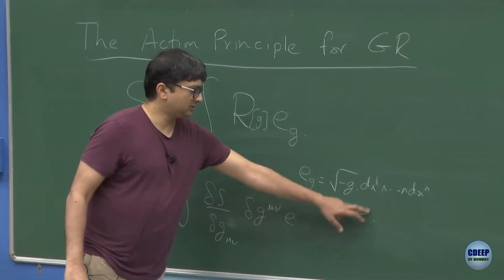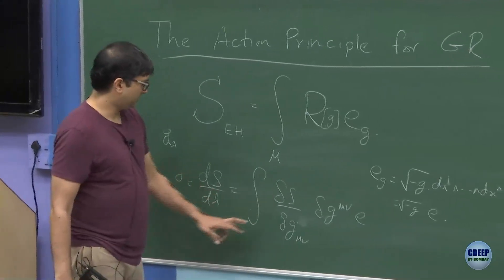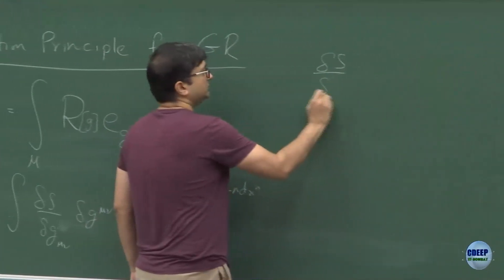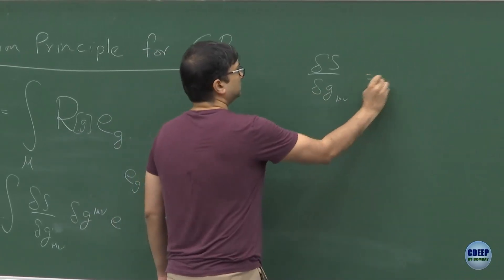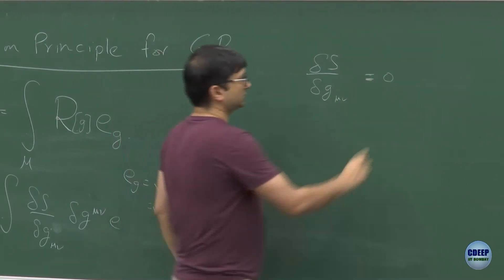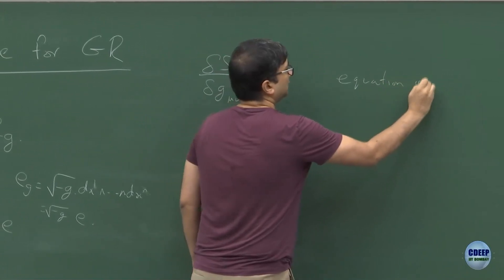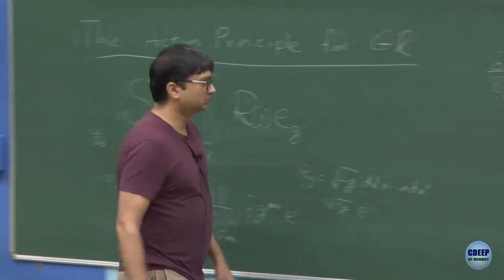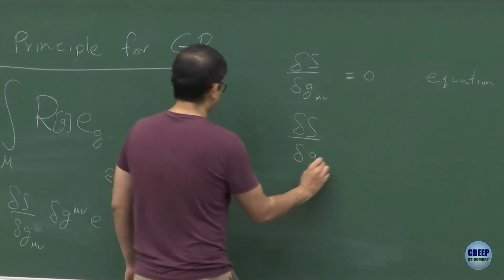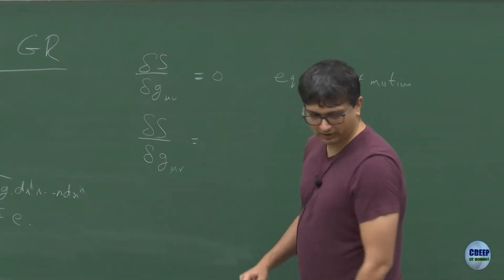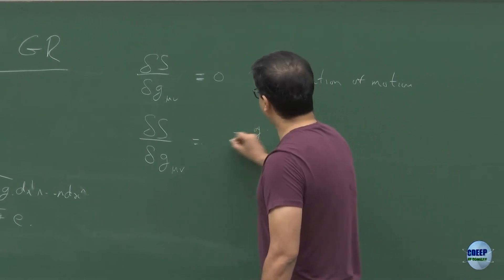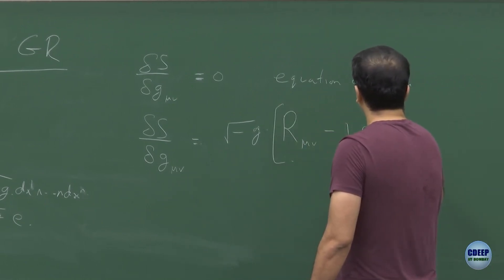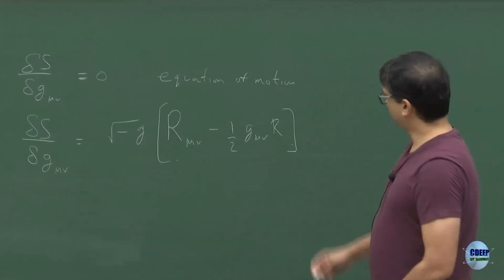E_g is related to another volume form E, but this volume form E does not depend on the metric. Setting the variation to zero is equivalent to demanding that delta S / delta g_{mu nu} = 0. This is the equation of motion. Last class we showed this variation has two parts: one part was simply minus sqrt(g) times (R_{mu nu} minus half g_{mu nu} R), and there was another part.